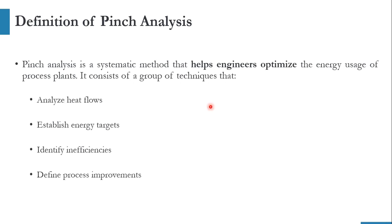Pinch analysis is a systematic method that helps engineers optimize energy usage of process plants. It involves: first, analyzing the heat flows — understanding the current heat requirement of the system; then developing energy targets — determining how much reduction is required; then identifying inefficiencies — finding where heat is leaking, for example identifying the part of a boiler with maximum heat loss and installing insulation there; and finally defining process improvements.